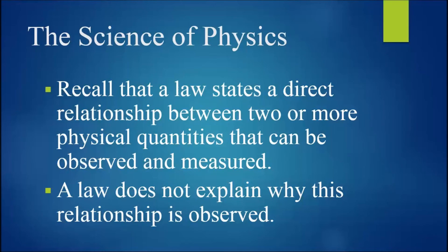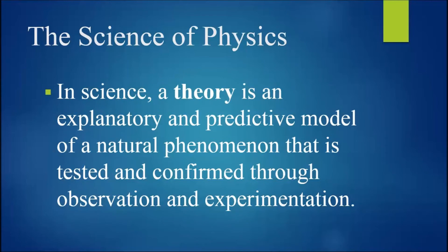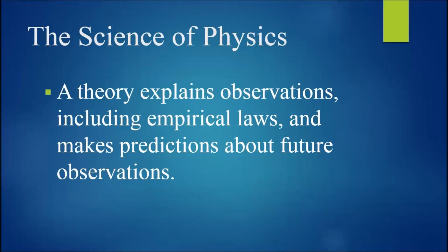Now recall that a law states a direct relationship between two or more physical quantities that can be observed and measured. A law does not explain why this relationship is observed. In science, a theory is an explanatory and predictive model of a natural phenomenon that is tested and confirmed through observation and experimentation. So a theory explains observations, including empirical laws, and makes predictions about future observations.